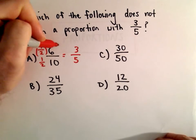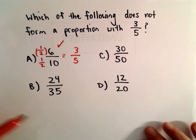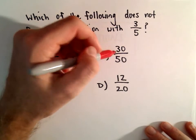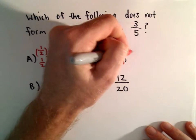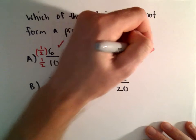Well, the same thing with part C, 30 over 50, well, we could just cancel out the zeros and be left with 3 over 5, so that one's okay.